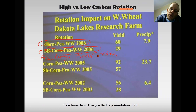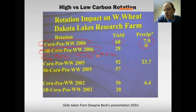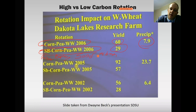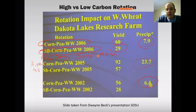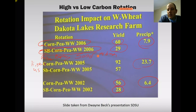By switching to a two-out-of-three-year high carbon rotation, on 7.9 inches of rain the year they do wheat, they got a 60 bushel wheat yield because of the water holding capacity of the soil, versus just 29. Looking at the same comparison with 23 inches of rain: 92 bushels versus 57. At 6 inches of growing season rainfall: 56 bushels of winter wheat versus 28 — all because of soil health and water holding capacity from just changing the mix of crops in the rotation.